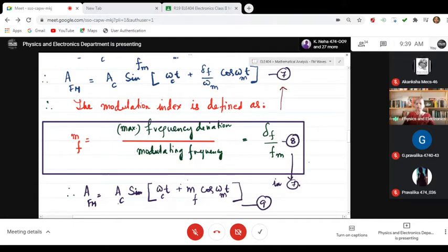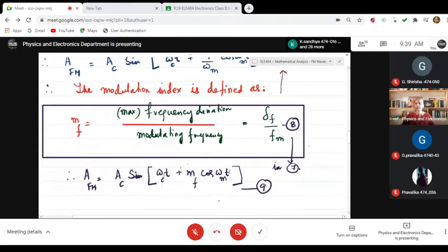So, what are you getting? a fm is equal to a c sin omega c t plus m f cos omega m t. That is equation 9.